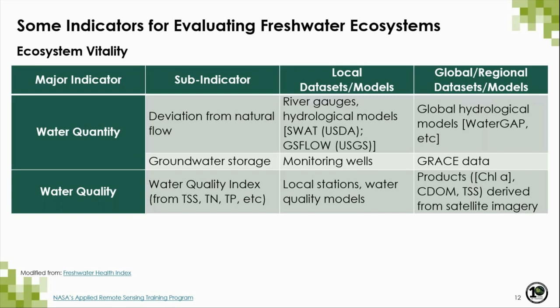Here are some indicators of ecosystem vitality and typical datasets used for assessing them. Water quantity can be expressed in terms of deviation from natural flow and groundwater storage, whereas water quality is usually analyzed with indices for particular constituents such as chlorophyll a, CDOM, total suspended sediments, and others. Typical datasets used for water quantity include river gauges, hydrological models such as SWAT and the coupled groundwater and surface water flow model GS Flow, combined with global models such as WaterGAP and satellite data from sensors such as GRACE, MODIS, and Landsat, for which there are already available products for different water quality parameters.